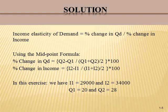Per the hypothesis, we have I1 equal to $29,000, which increases to I2 equal to $34,000. This directly led the quantity to increase from Q1 equal to 20 pounds to Q2 equal to 28 pounds.